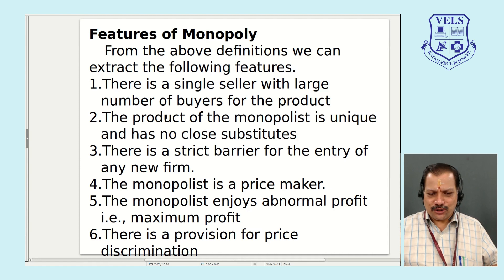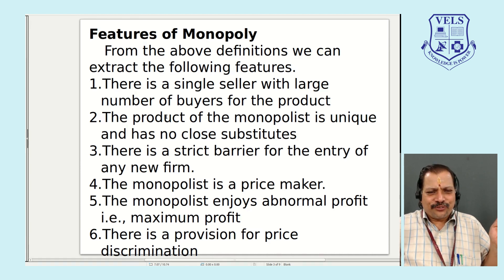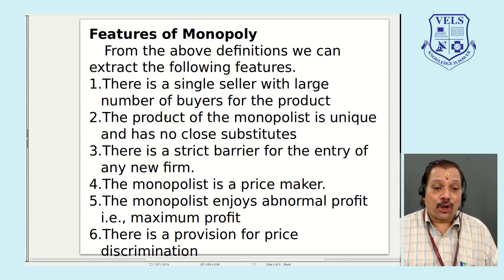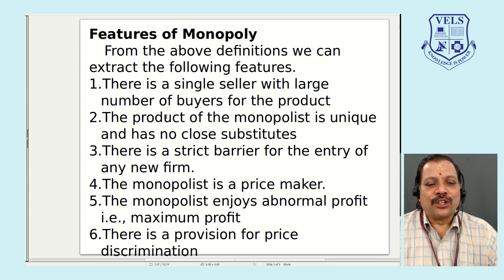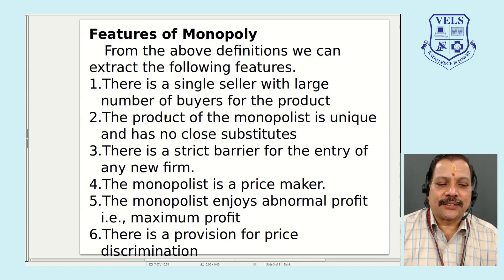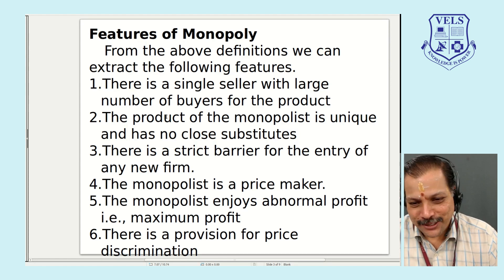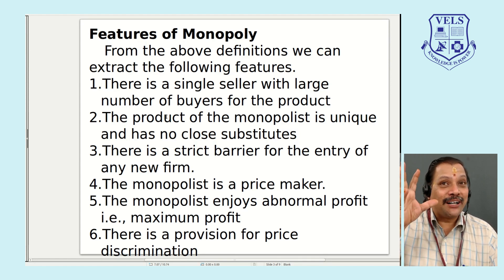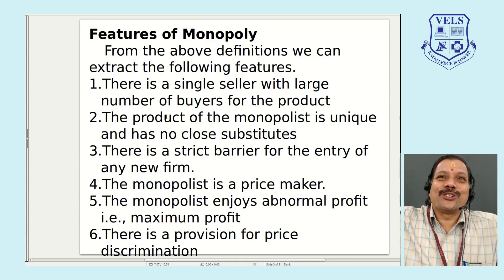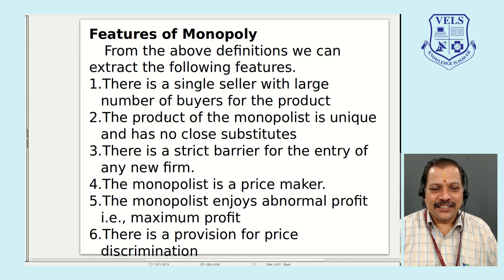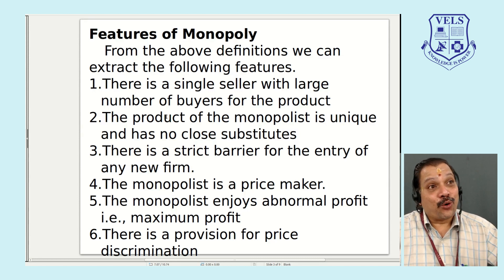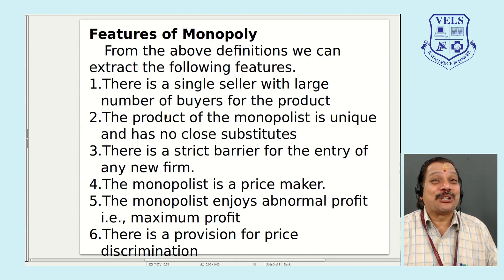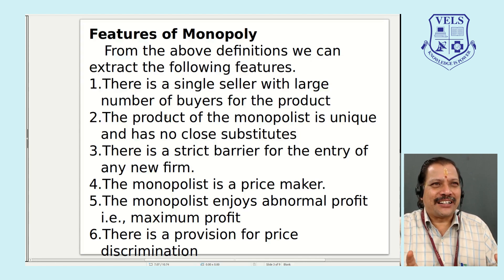Now let's move to the features. Like perfect competition, monopoly also has a number of features. The first feature is the number of buyers and sellers — there is a single seller with a large number of buyers. The second feature is that the product of the monopoly is unique and has no close substitutes. Others cannot produce the identical product.